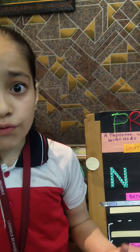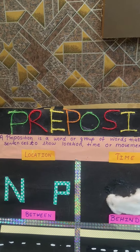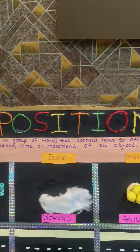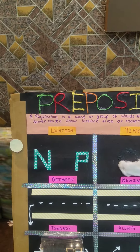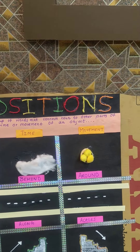Hello all, my name is Adhya Chorek from class 4C. I have chosen parts of speech, and today I am going to explain preposition. First we have to know what a preposition is. A preposition is a word or group of words that connects a noun to other parts of a sentence to show location, time, or moment of an object.